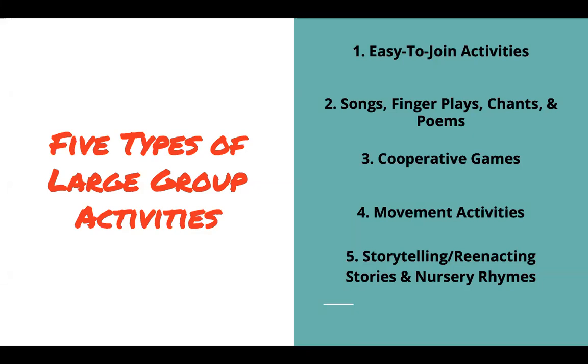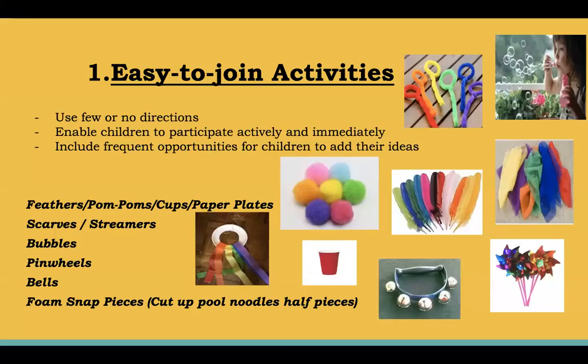First are the easy-to-join activities. This type of large group activity is short and fun, using very few or no directions at all. They enable children to participate actively and immediately and include frequent opportunities for children to add their own ideas. There are lots of different types of materials that can be used — such as feathers, pom-poms, cups, paper plates, scarves and streamers, bubbles, pinwheels, bells, and foam snap pieces. Children will usually come up with their own ideas of how to use the materials once they are familiar with them.